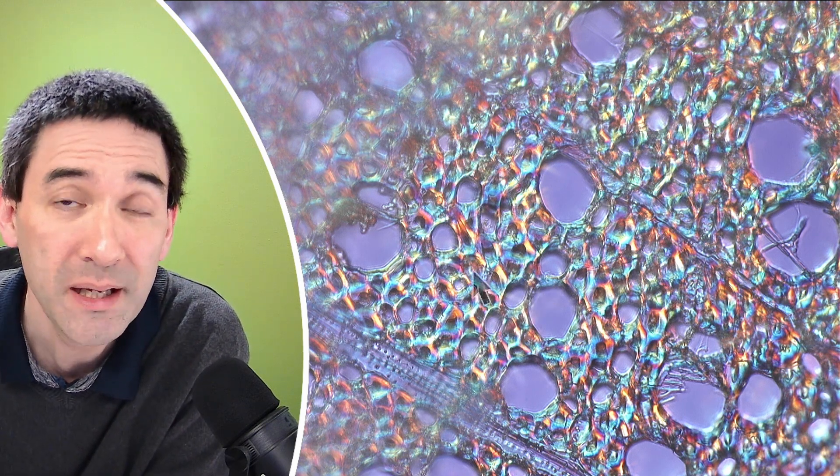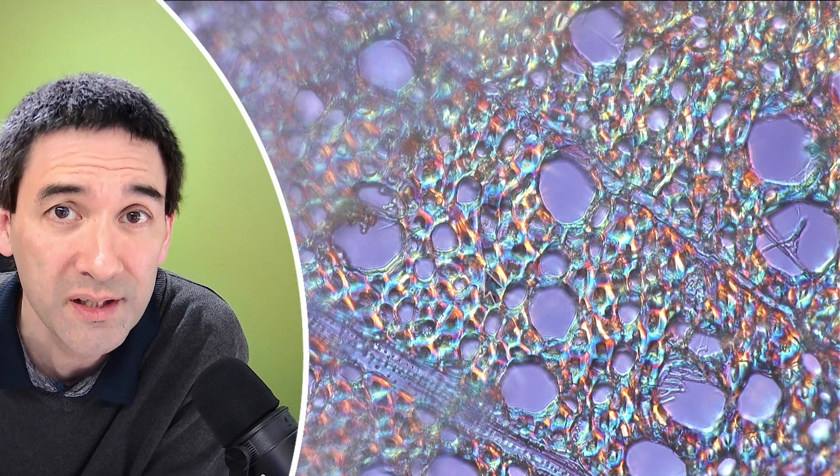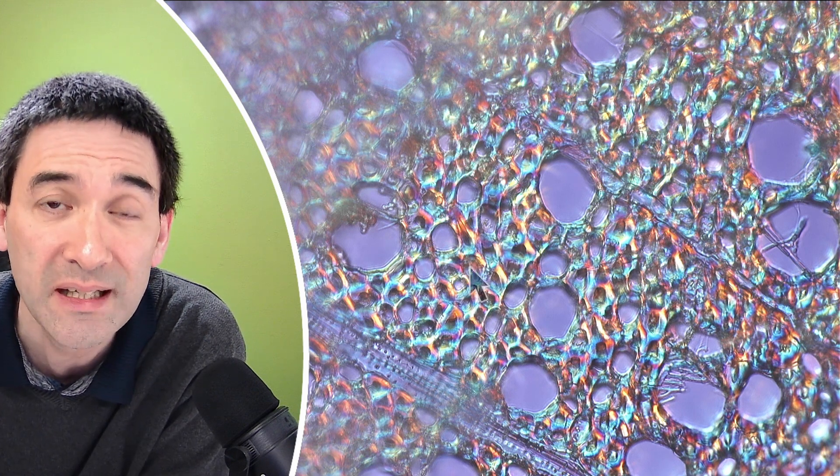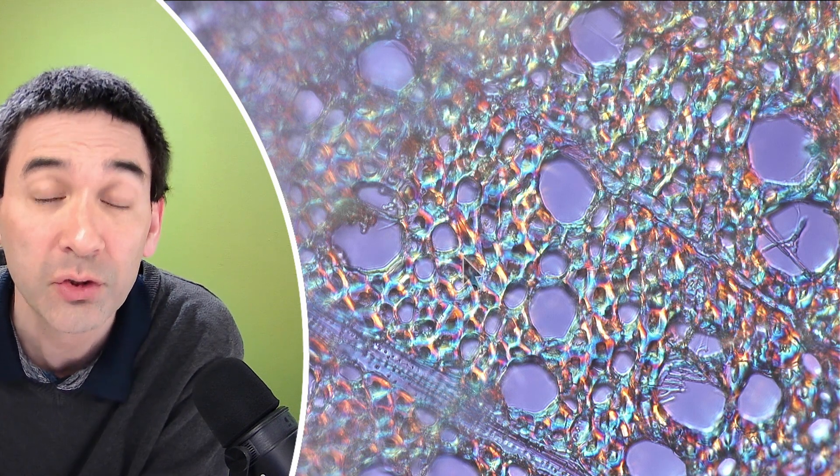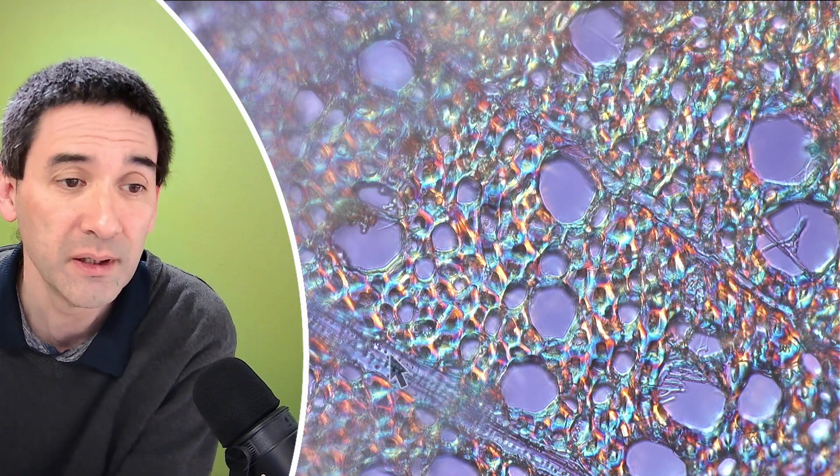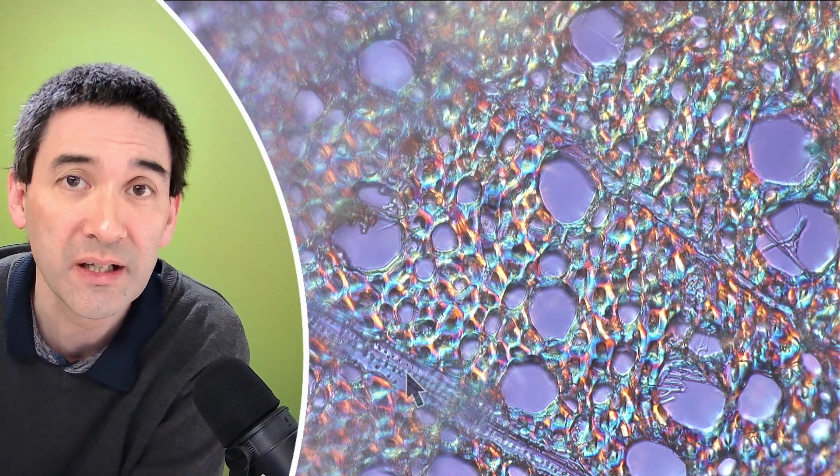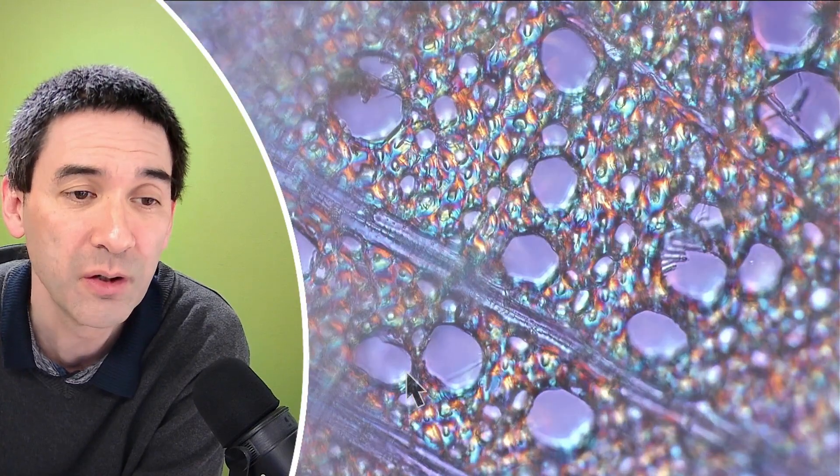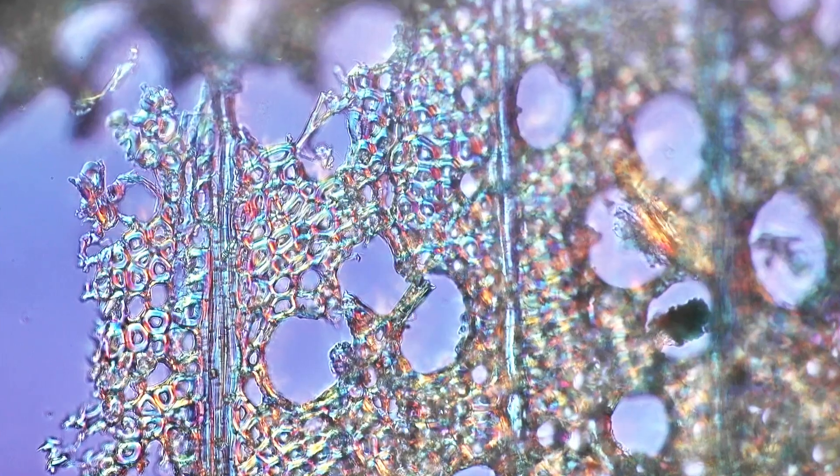Basically there's no cell contents because we're looking at the inside of the wood. The living part of the tree trunk is actually on the outside. You've also got cells that are running across like this to supply the different parts of the stem with water.